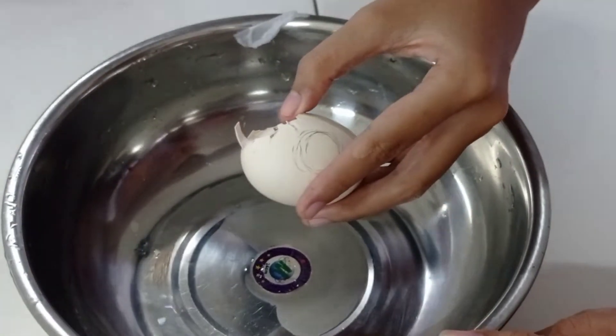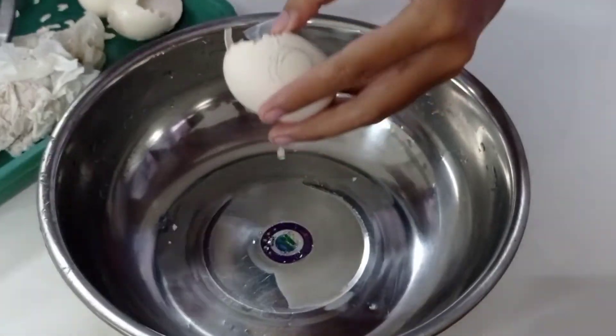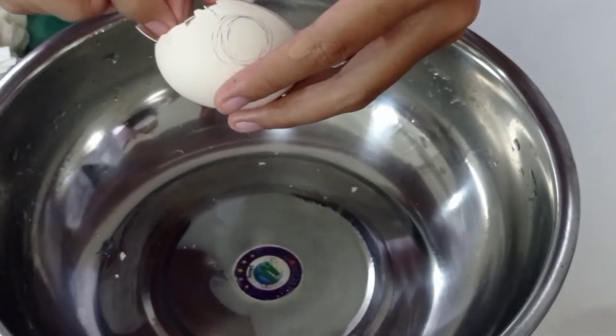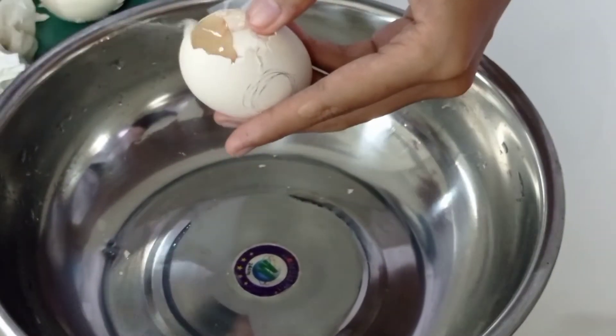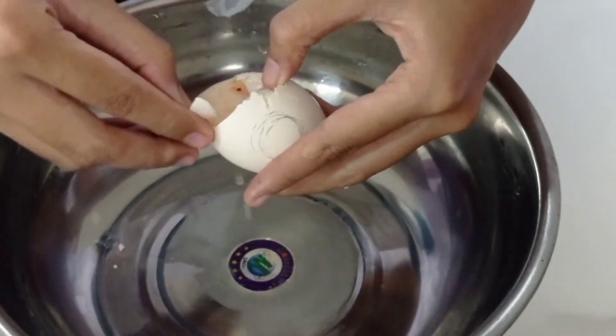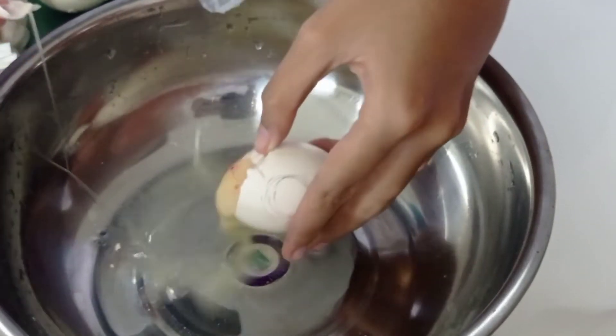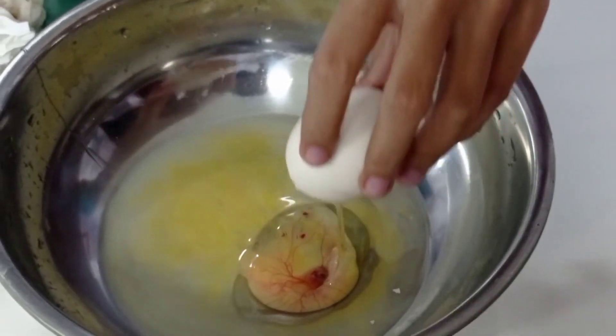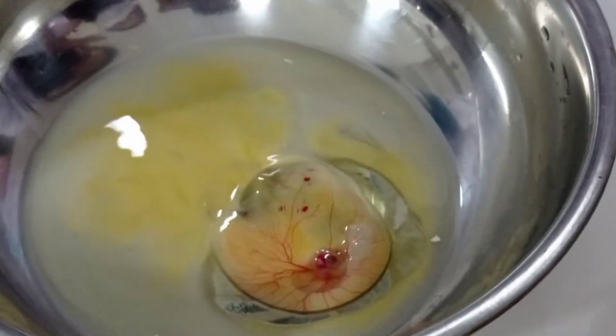Lalu ada cara lain, yaitu dengan mengupas secara perlahan-lahan menggunakan pinset dimulai dari bagian atas telur atau rongga udara pada telur. Dikupas perlahan hingga tiga per empat bagian telur, kemudian dituangkan ke dalam baskom.